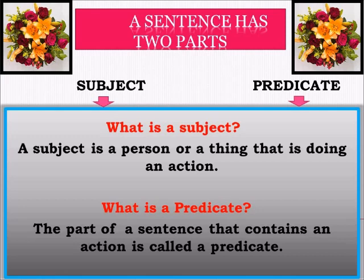A sentence has two parts: the first one is a subject and the second one is a predicate. A subject is a person or a thing that is doing an action. Now let us understand what is a predicate.